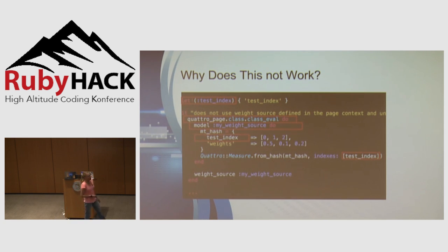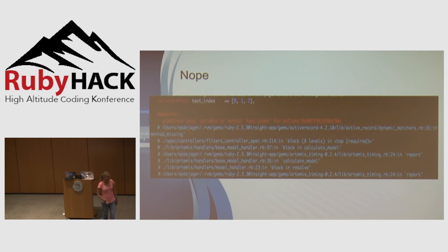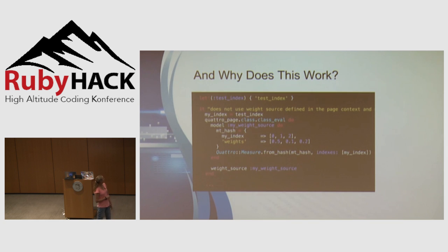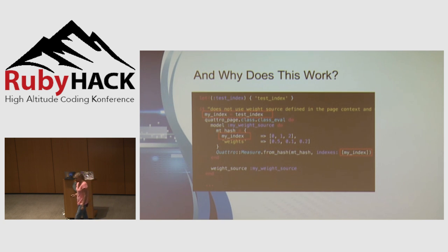Based on the example I just showed, I thought this would just work. However, when I ran it I got Ruby complaining about an undefined local variable or method test_index. What was even weirder was that a slight modification — defining a local variable my_index inside the it block, assigning test_index to that, and using my_index inside the nested blocks instead — made the RSpec example pass without a hitch.